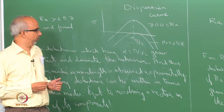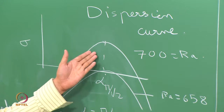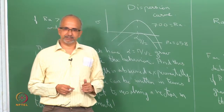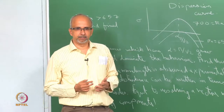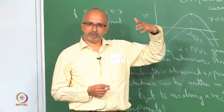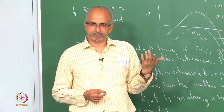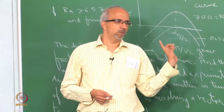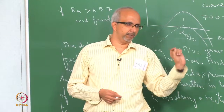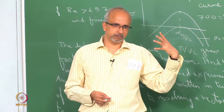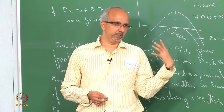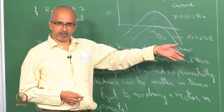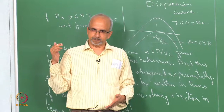Since sigma is positive for Rayleigh number greater than 657, one might expect the disturbances to grow exponentially without bound. But the linear stability analysis assumes only small perturbations. As the velocity and temperature increase, the linear stability analysis can no longer be used — the actual system involves nonlinear higher-order terms. The disturbance form is e^(σt) times a function of x, and if σ is positive this grows exponentially.